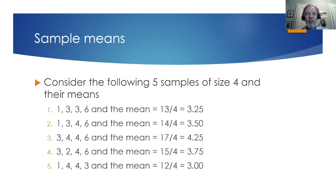Let's consider the sample means of the following five samples of size 4. The first one we'll consider is the sample that contains 1, 3, 3, and 6. The mean of that is 3.25. The next one would be 1, 3, 4, and 6 with a mean of 3.50.